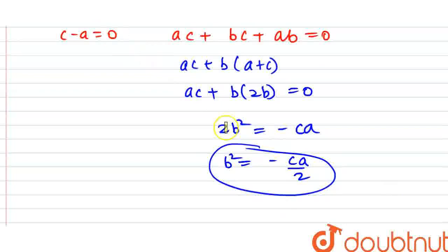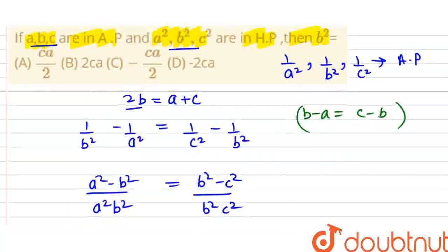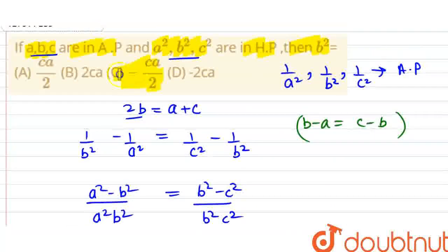So the value of B squared is minus C A upon 2. Option C is my right answer. Thank you, friends!